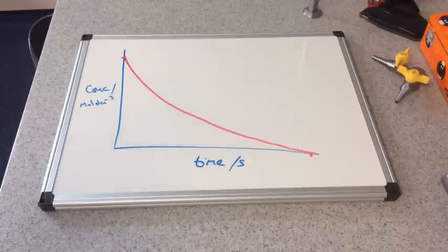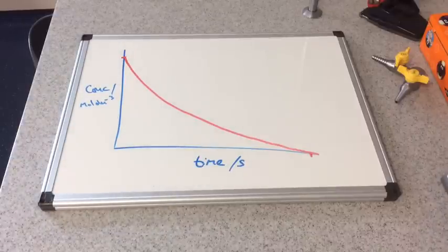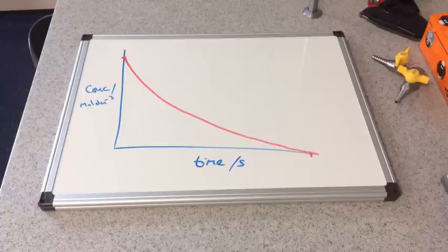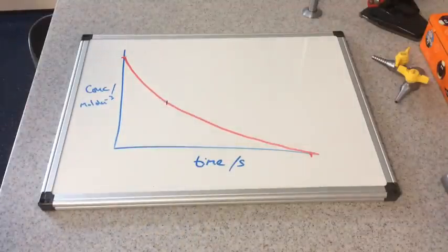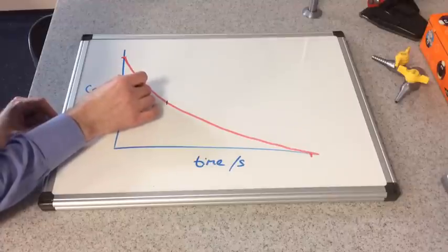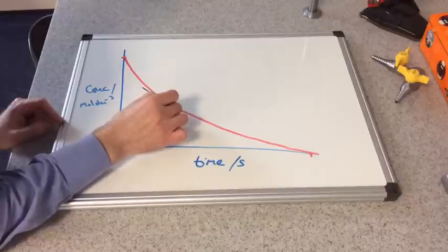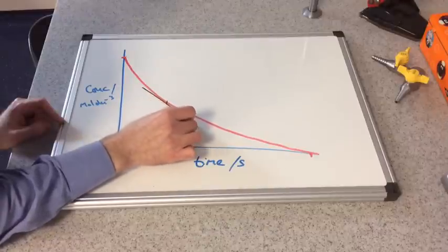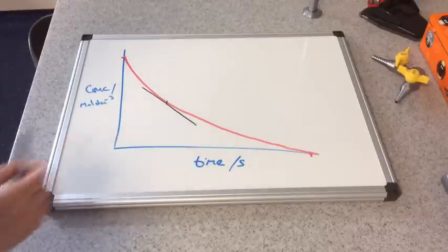So if we remember how to calculate rate, rate is the change in the concentration over time. Then we need to use some math skills to work out the rate at a particular time. So let's suppose we wanted to know what the rate was at that particular time there. So what we would do is we would draw a tangent, which is a straight line which only touches the curve at that point. And what we need to do is work out the gradient of this tangent.